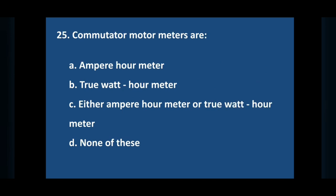Question number 25: commutator motor meters are. Answer is option C, either ampere hour meter or true watt hour meter.